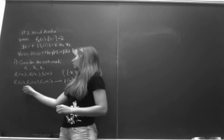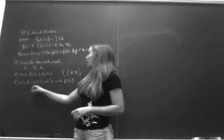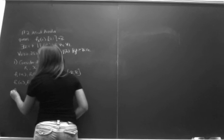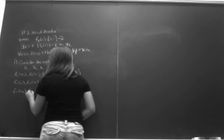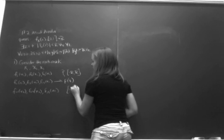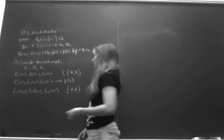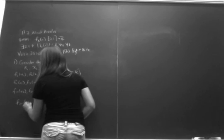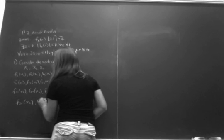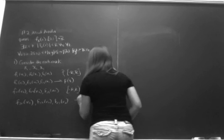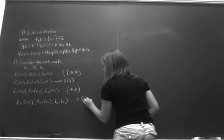Now we take these functions that we've denoted by certain subscripts, replace x₁ with x₂, and see how that goes. So we evaluate f_{1,1}(x₂), f_{1,2}(x₂), f_{1,3}(x₂). Again, this exists on the compact subset [−R, R], so we can again use Bolzano-Weierstrass to extract a convergent subsequence. We'll call this f_{2,1}(x₂), f_{2,2}(x₂), f_{2,3}(x₂), etc. It converges to f(x₂).